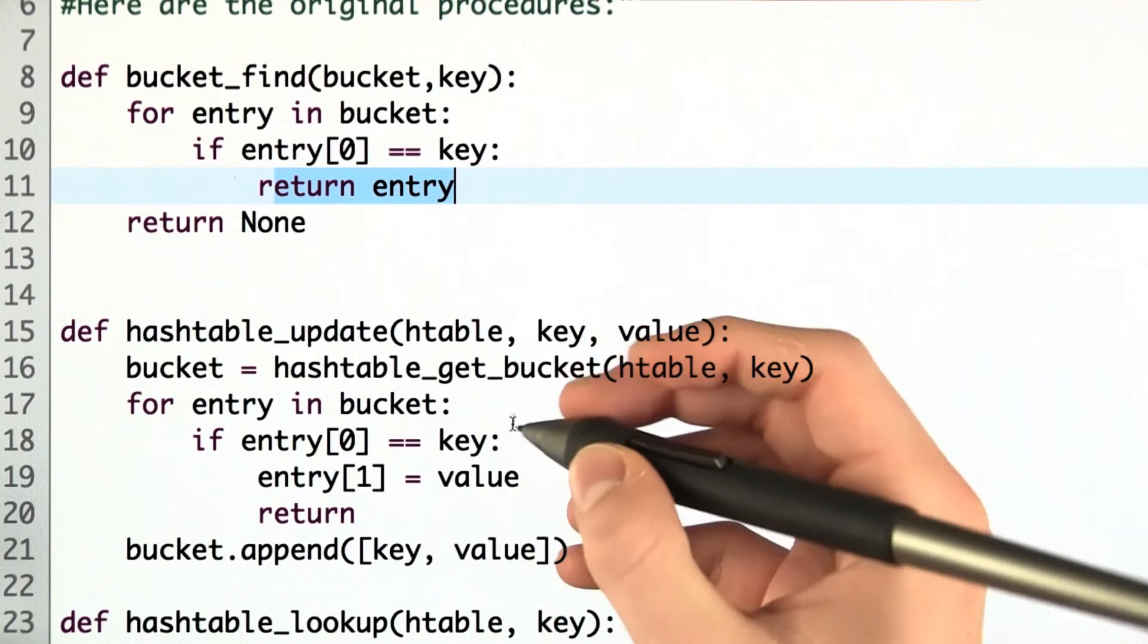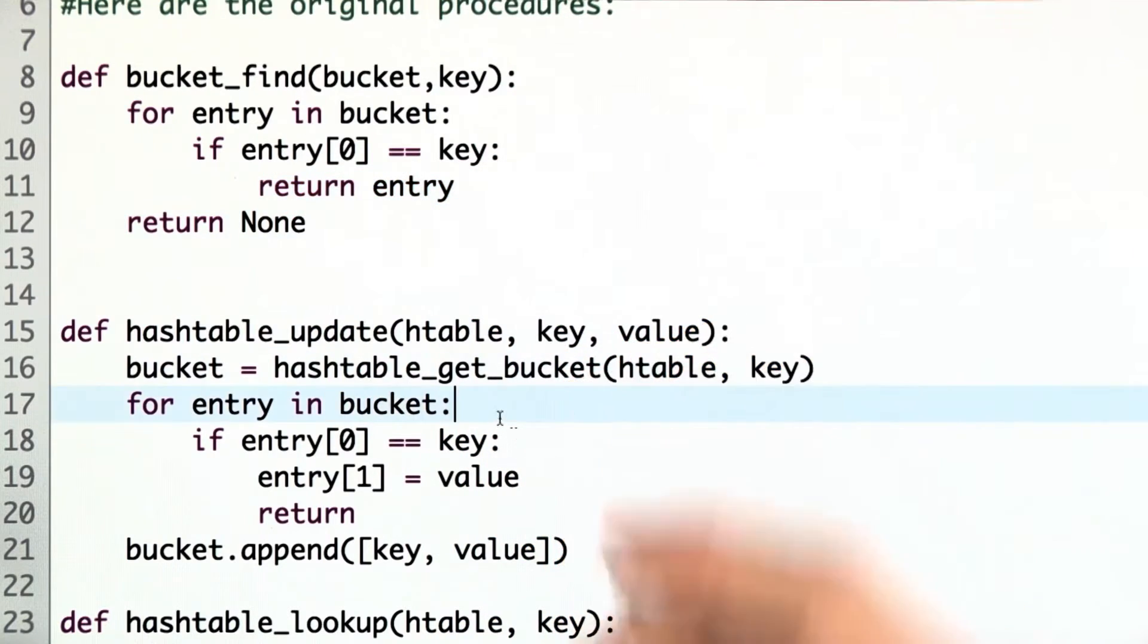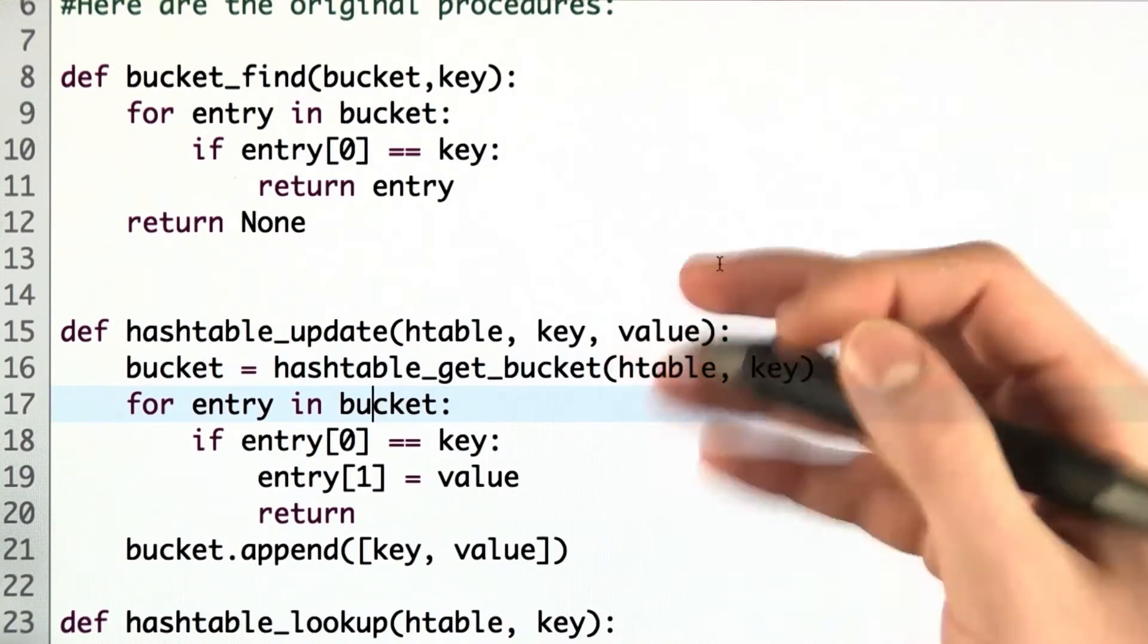So now that we have the helper function, let's change our Hashtable functions to use it. The resulting code is going to be both simpler and shorter.